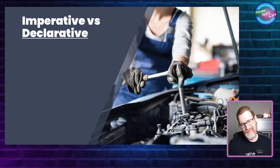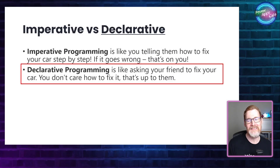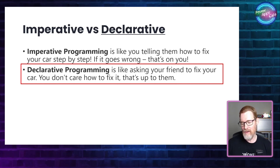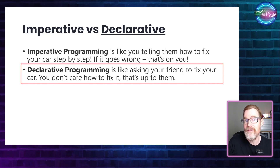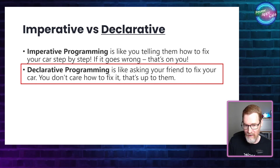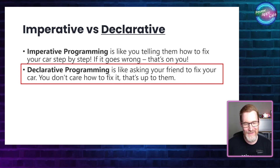A common analogy is with fixing a car. Imperative is like inviting your friend over and telling them step by step: pick up that spanner, undo that nut, take the old carburettor out and put the new one in. If something breaks, it's on you — because you told them the wrong steps. But declarative programming is where you simply ask them over and say, can you fix my car because there's something wrong with the carburettor? And if something goes wrong, it's probably down to their skills, nothing to do with you.